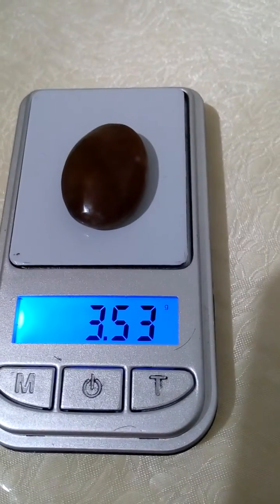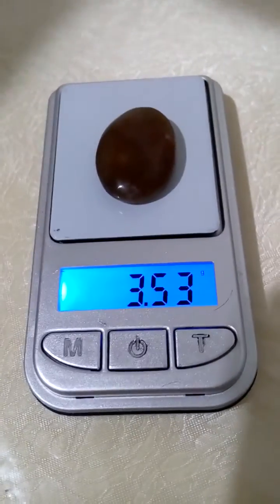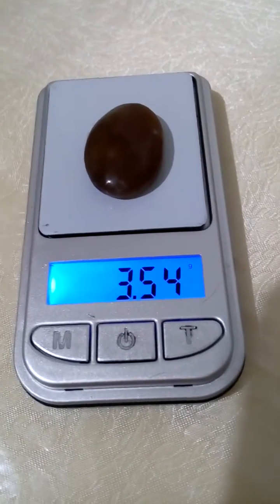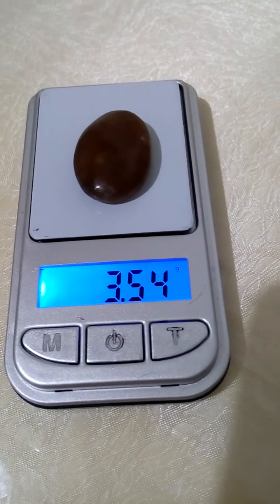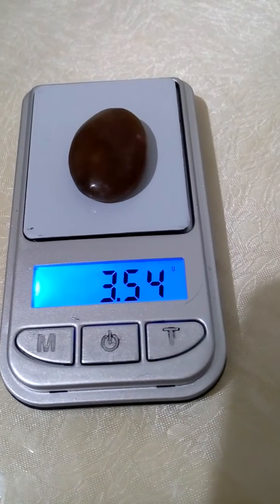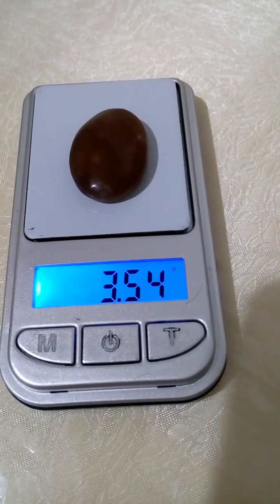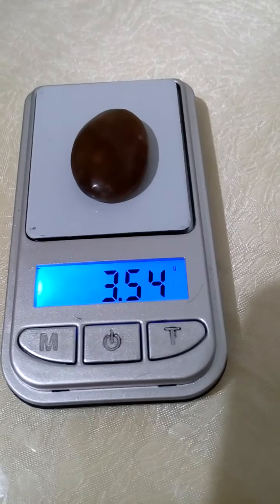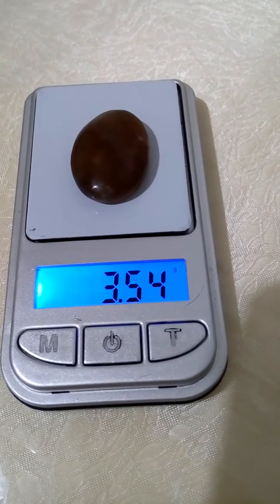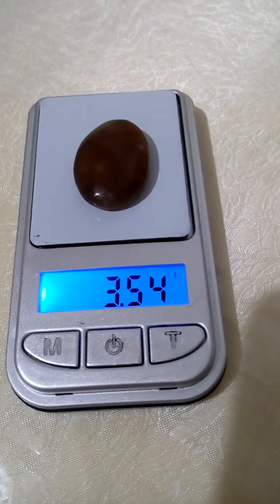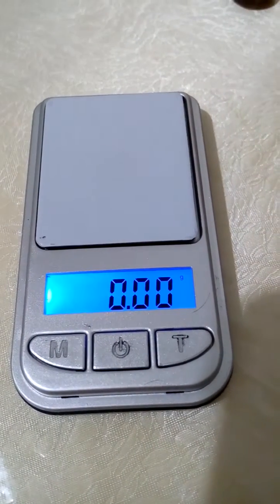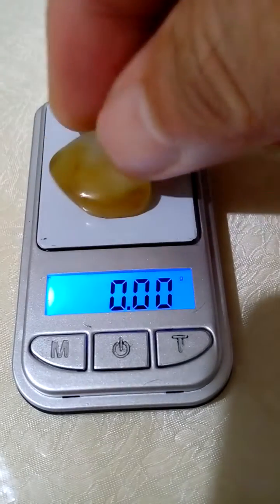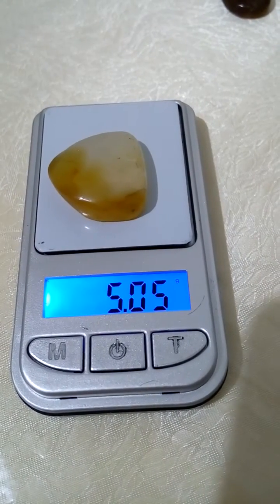As we see, we measure the weight of the first stone and it shows the result of 3.54 grams. We simply write the result on a piece of paper. Then we measure the weight of the second stone and we find it 5.06 grams.